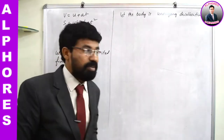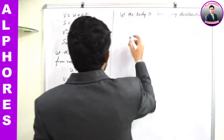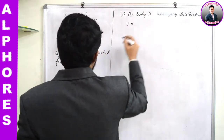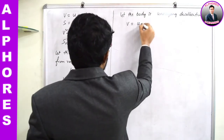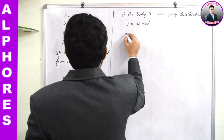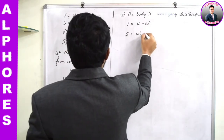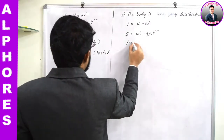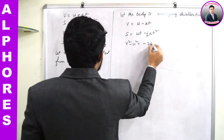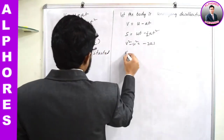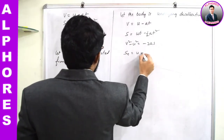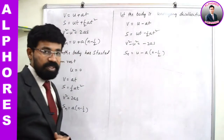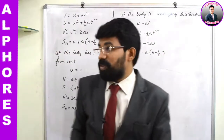Velocity is decreasing with time. If that is the situation, you have to replace a with -a. Then these equations get modified like this: v = u - at; s = ut - ½at²; v² - u² = -2as; and Sn = u - a(n - ½).